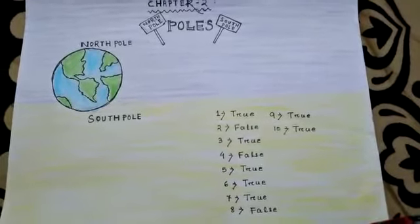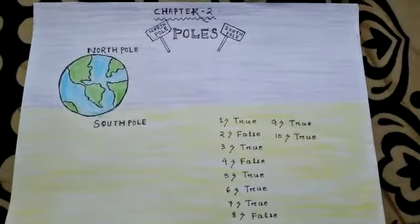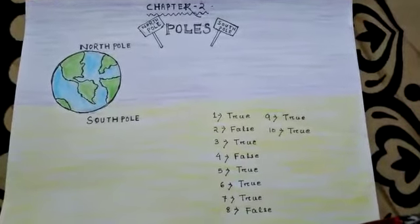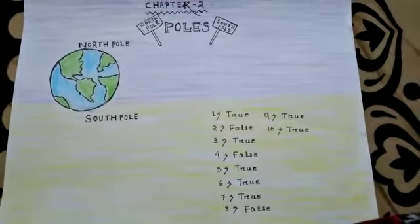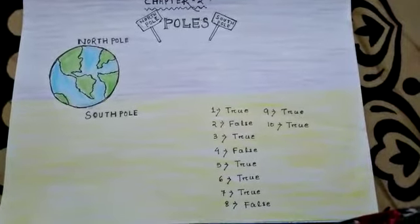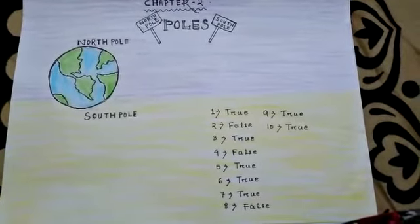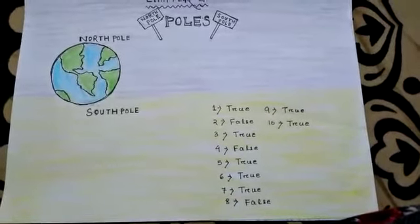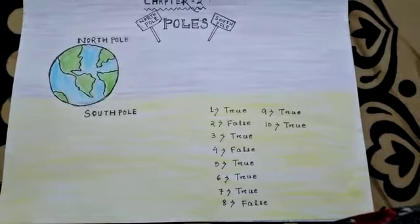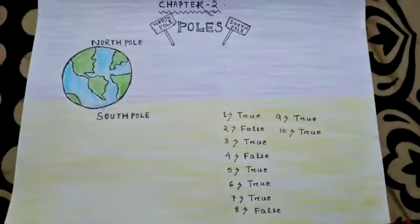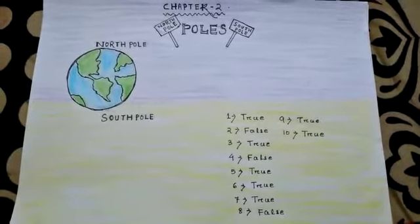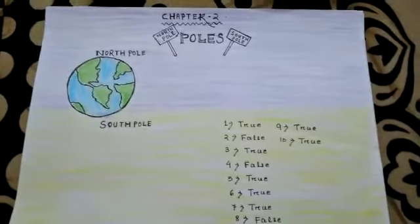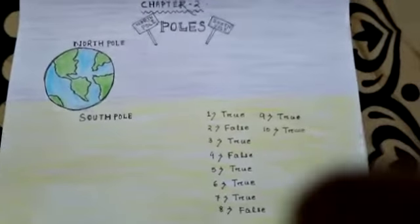Both the poles are covered with ice, and you can feel extreme temperatures at both the poles. The South Pole is the southernmost point of the Earth's axis, located in Antarctica. You can feel extreme cold over the poles. Now let us discuss the question-answer section.